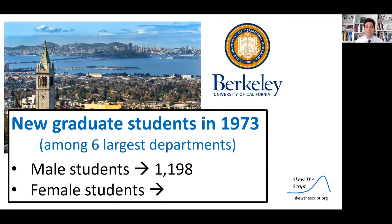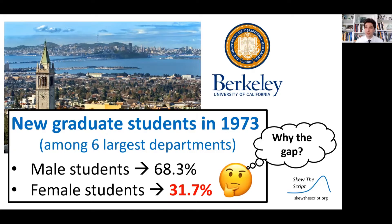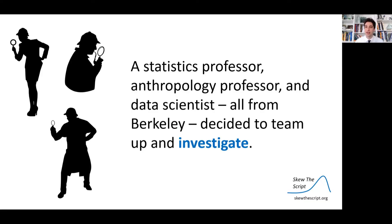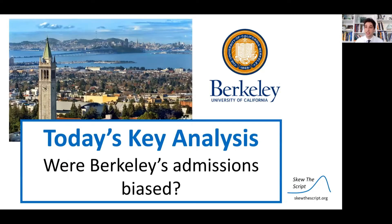And it looks like there might be one. Among the admitted students, 1,198 were male and only 557 were female. If you break that down in terms of percentage, only about 32% of the admitted class of graduate students were female. At the time, university employees were wondering why this gap exists and what's driving it. So a stats professor, an anthropology professor, and a data scientist, all from Berkeley, decided to team up, gather data, and investigate. Today's key analysis asks: were Berkeley's admissions biased along gender lines?